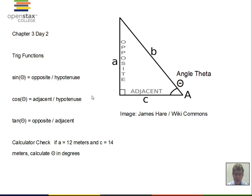Do a quick check on your calculator. Suppose you have a value of A of 12 meters and a value of C of 14 meters. A is the opposite side and C is the adjacent side, so you can calculate the tangent by dividing those two. I came up with 0.857, which is the value of tangent theta.